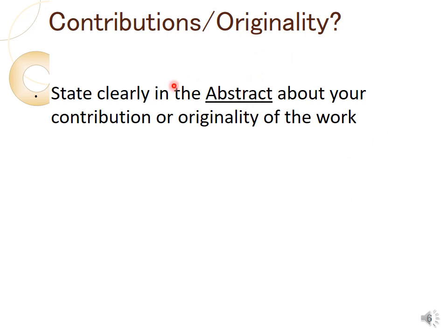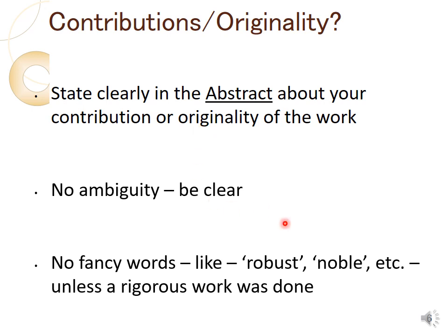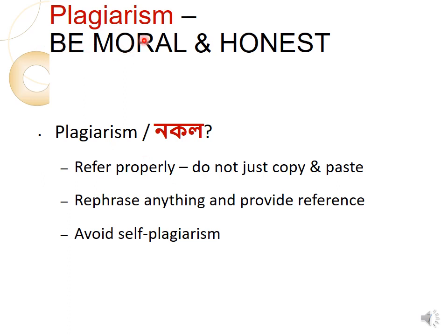Clarify the originality and contributions of your work clearly in the abstract. No ambiguity — be clear and honest. Avoid fancy words like 'robust' or 'novel' unless rigorous work was done. In one of my earlier papers I used such a word, and at a conference a reviewer challenged the author asking why 'robust' was in the title when no robust strategies or rigorous methods were demonstrated. Attending good conferences and meeting experts teaches you these lessons.